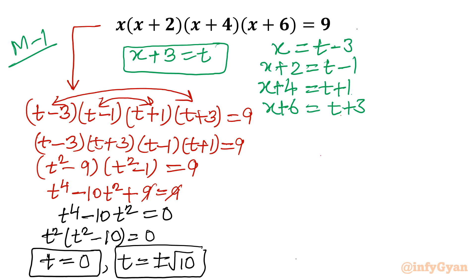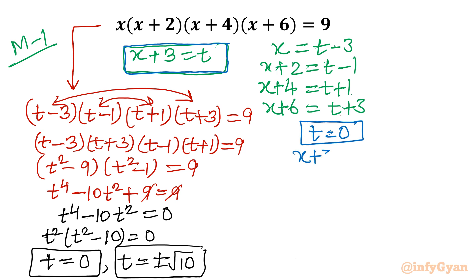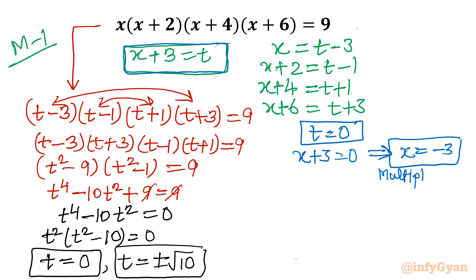Now I will put back the value of t. Since t was x plus 3, let us put t equal to 0. That means x plus 3 equal to 0, so x equals negative 3 is our answer, and it has multiplicity 2 — because of the t² factor.